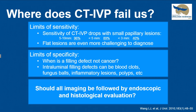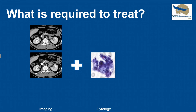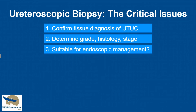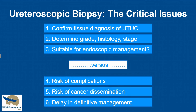Should all imaging be followed by endoscopic and histologic evaluation? If we see a CT with an obvious filling defect, is that adequate to do a nephroureterectomy? If we have CT plus cytology showing high-grade disease, maybe that's enough. Or do we need cytology and biopsy in addition to the CT? The critical issues are: what do we want to get out of the biopsy — confirmation of urothelial carcinoma, grade, variant histology, stage, and suitability for endoscopic management. But we also have to consider the downsides: risk of complication, risk of disseminating cancer, and delay in definitive management.